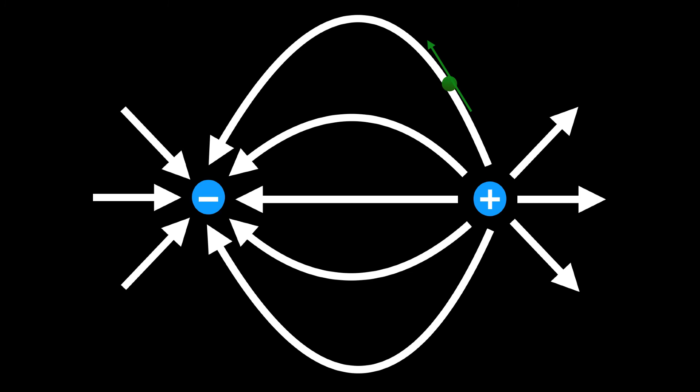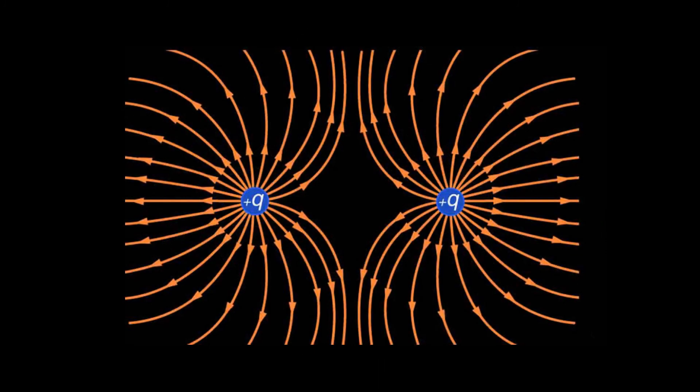All right, to conclude we have one final example and in this example we have two positive point charges of the same magnitude. So this is a great example of how the electric field lines never intersect.